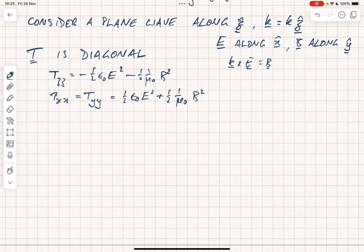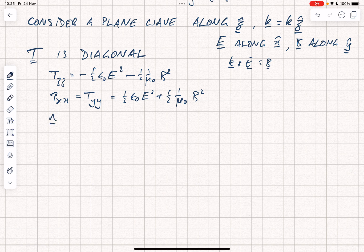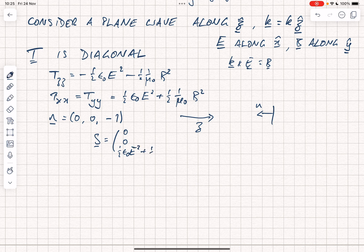Let's take two simple examples. So first of all, let's consider a surface where the normal N is equal to 0, 0, minus 1. In that case, if we've got the Z direction like this, our surface is going to be here with a normal pointing in that direction. In that case, the stress on that surface can be written purely along the Z direction actually. So that's 0, 0, a half epsilon naught E squared plus a half one over mu naught B squared.